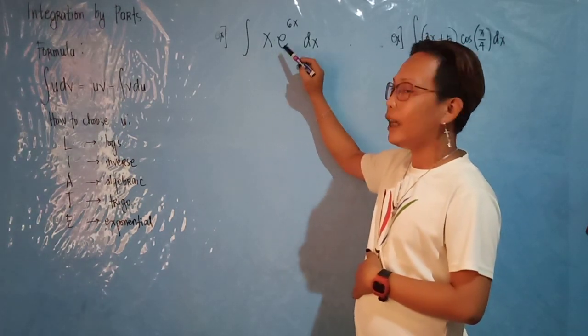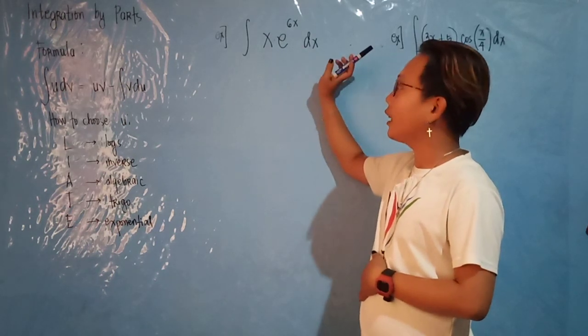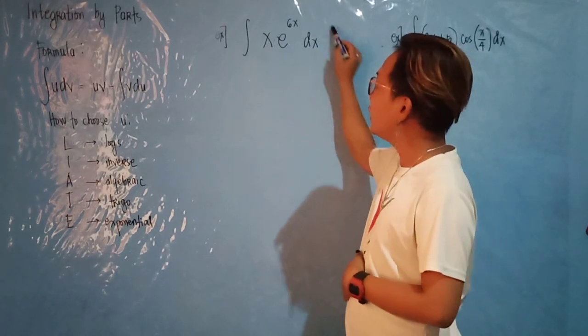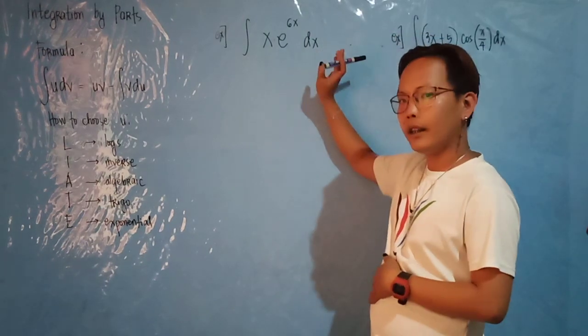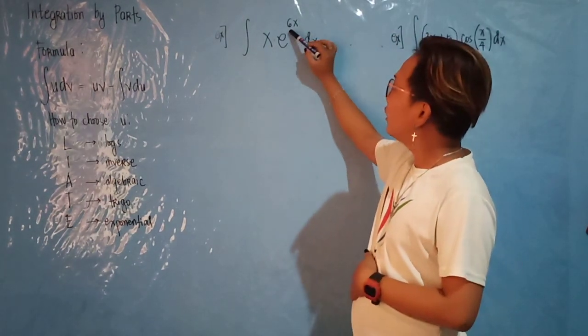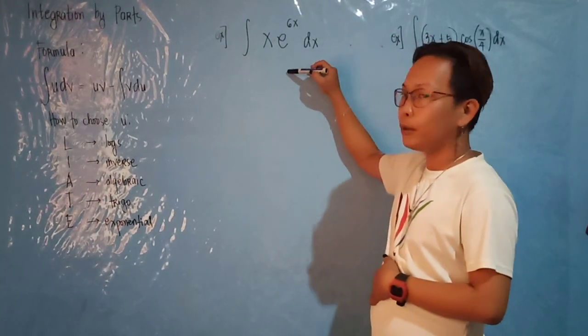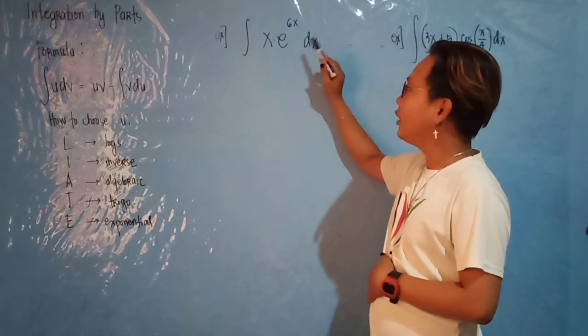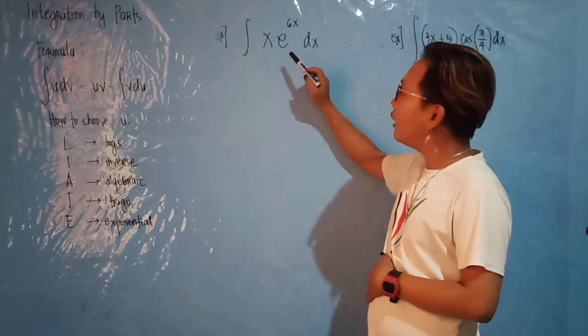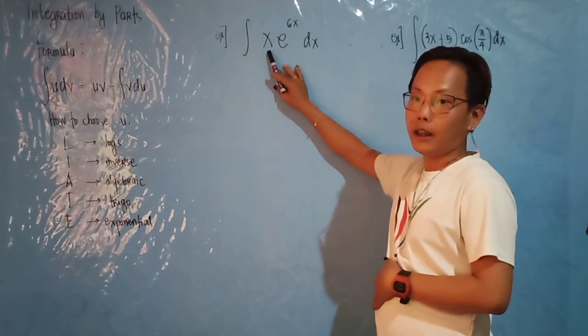For example, you have x and e raised to 6x. If you solve this as direct integration, you would set u equals 6x, then your du is just 6 dx. But you still have x at the bottom, so it's not directly integrable.